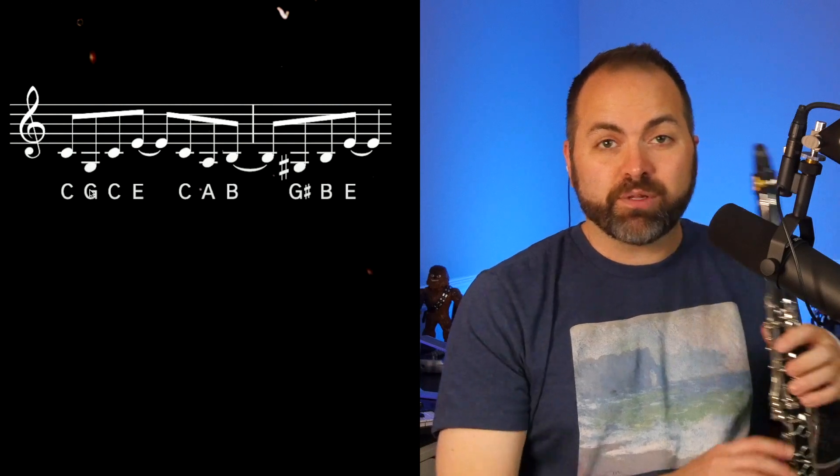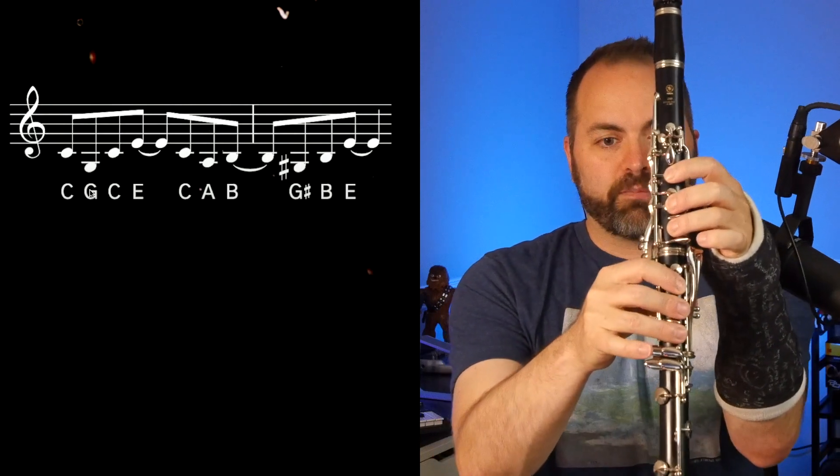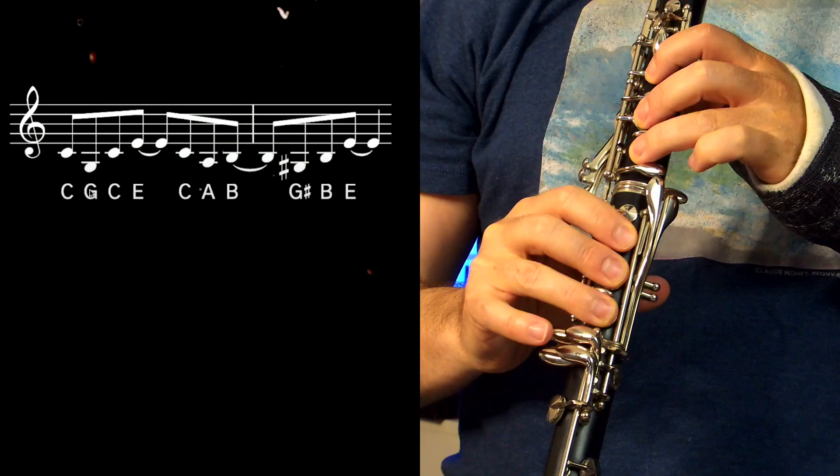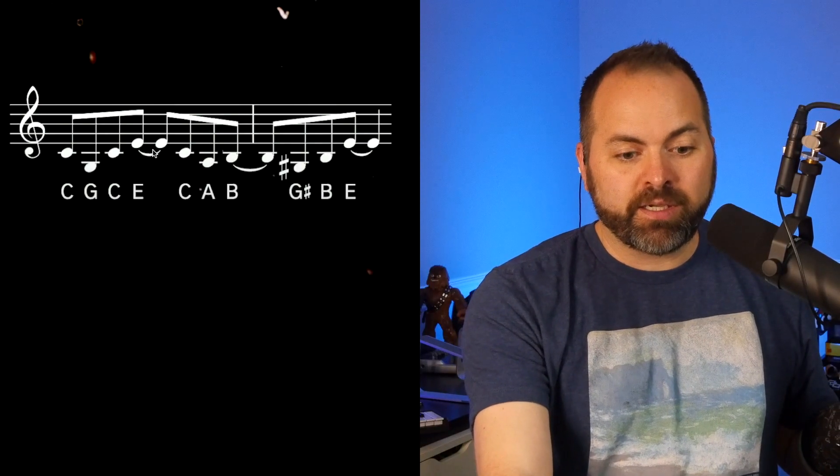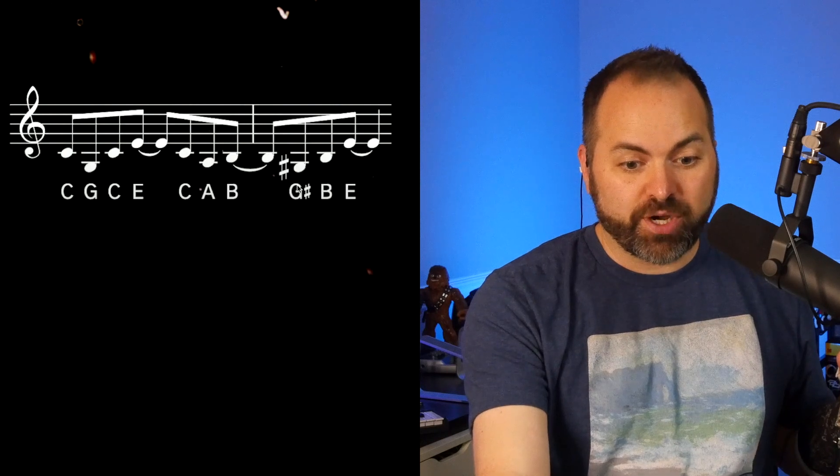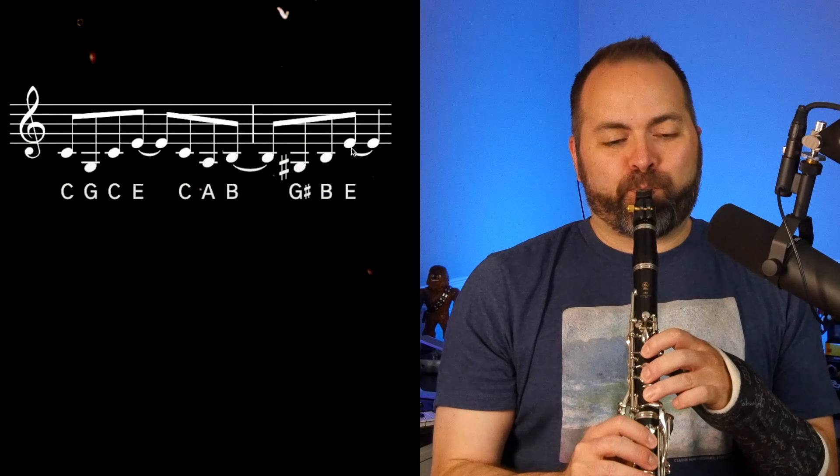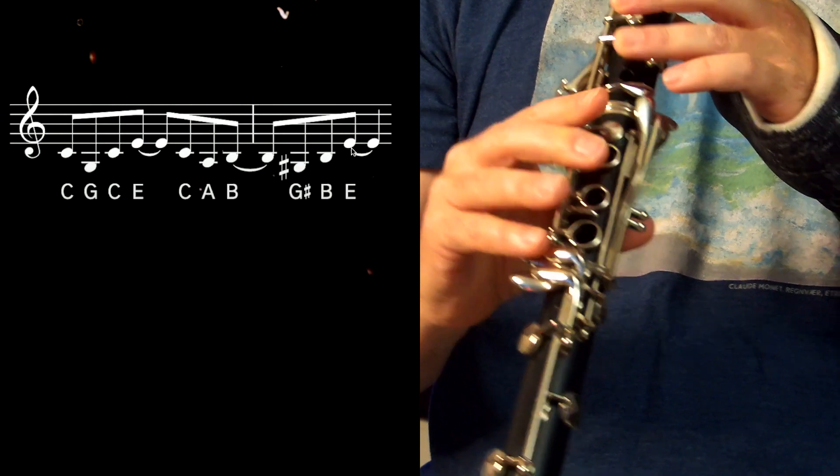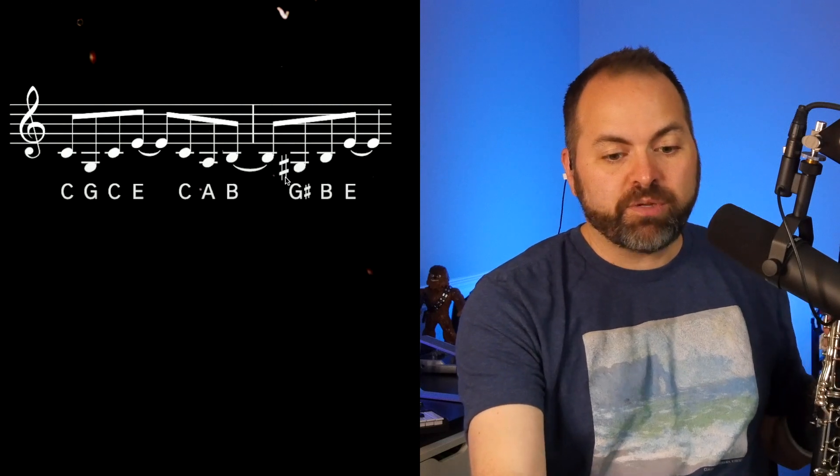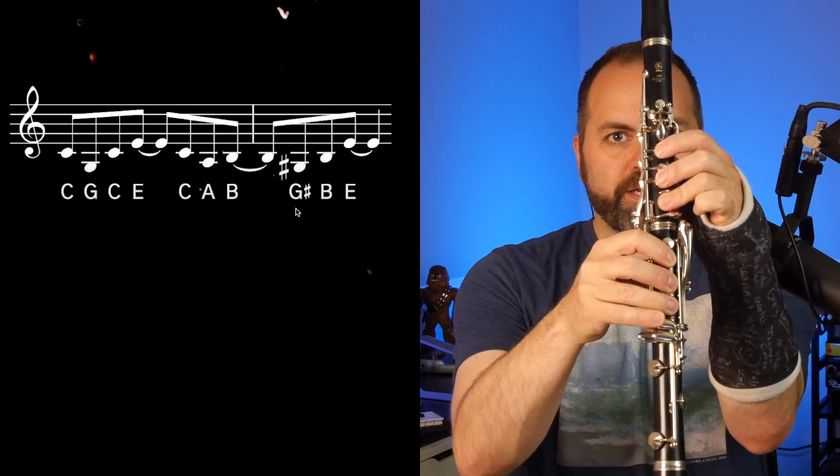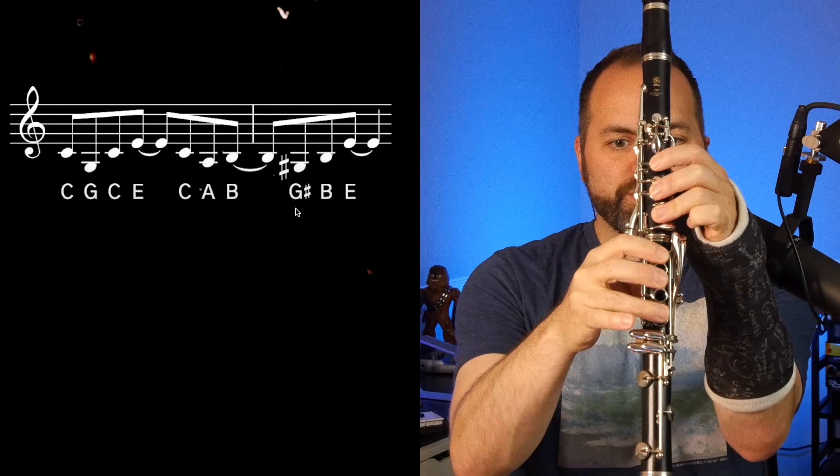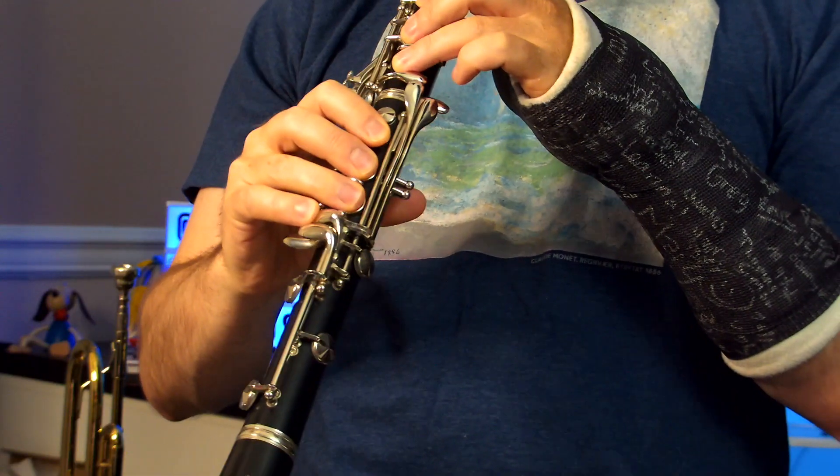The next line down, we have phrase three, and this has a little bit of a jump down to a low G. So low G is when you play a C, and three fingers down here. Here's your low G. So C, G, C, E, C, A, B, G sharp, B, E. I'm not even singing that correct. Let me play it. Do you know how to play this G sharp? So G with a sharp next to it, G, and add your pinky right here on the top, top pinky key right below the G. That's G sharp.